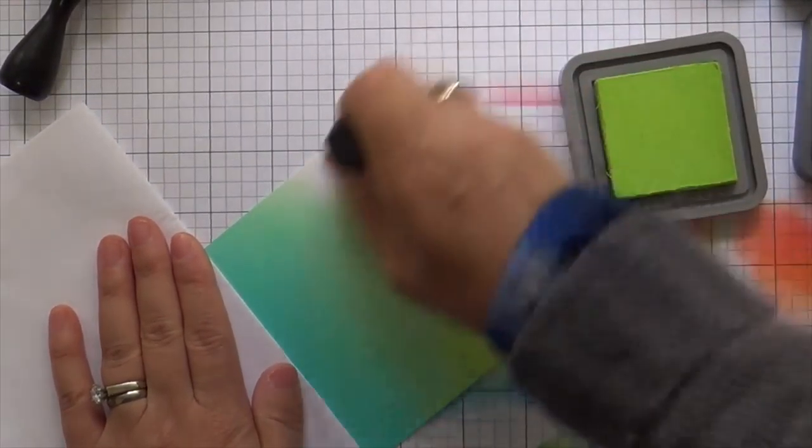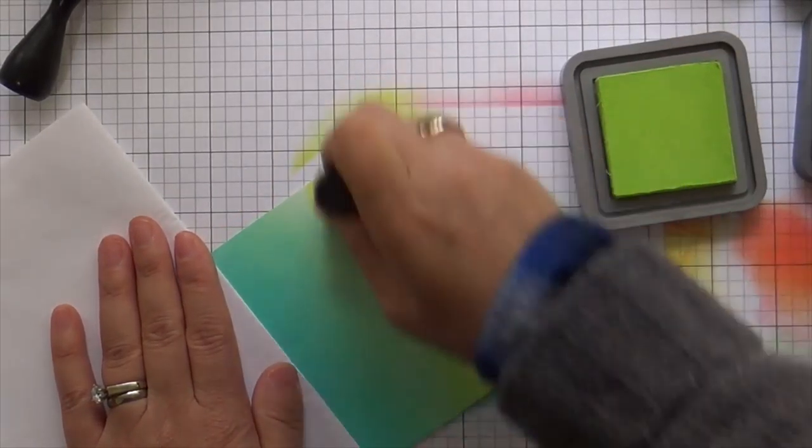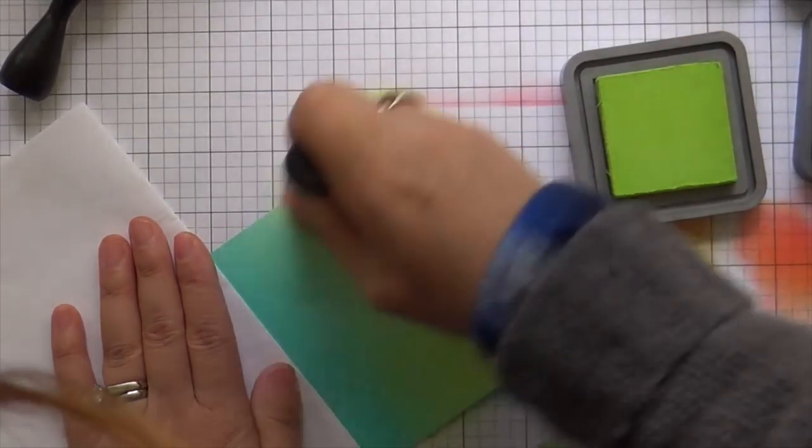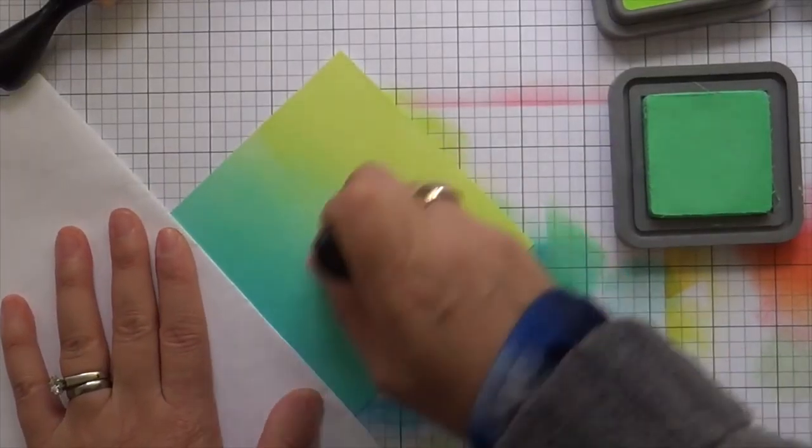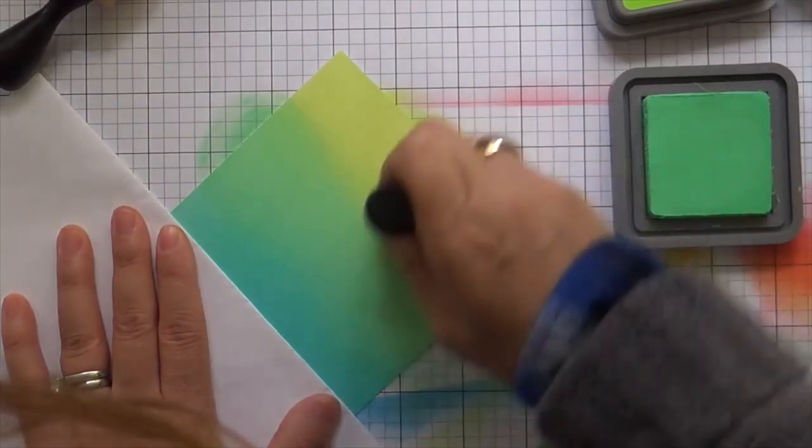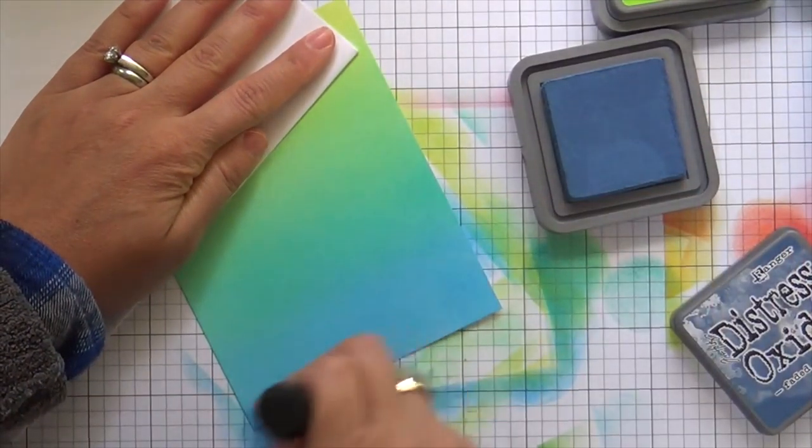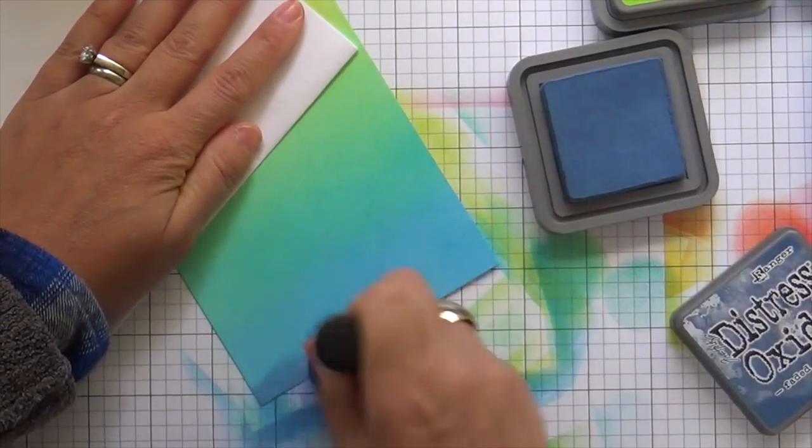smearable. I can't do a card without Twisted Citron, so I use Salty Ocean, Peacock Feathers, Cracked Pistachio, and then finish off the top with Twisted Citron. Blending the colors together, mixing them, you just go back and forth a couple times and it's like room-temperature butter. I wanted to